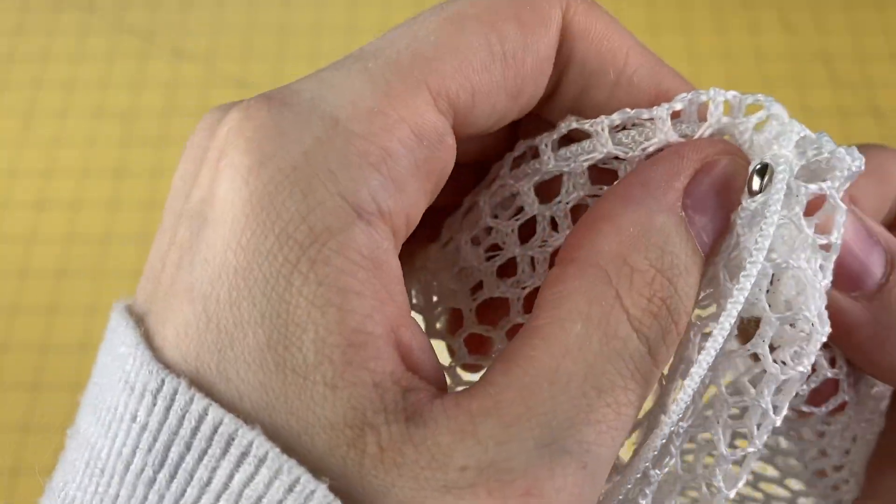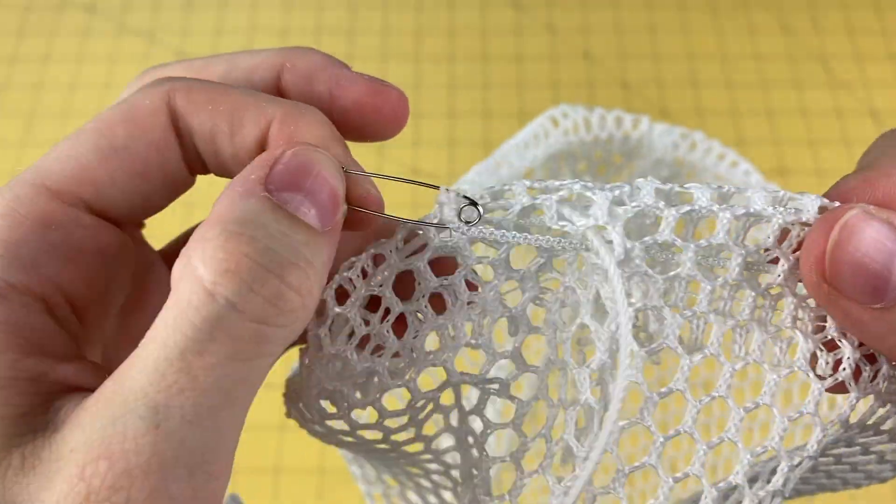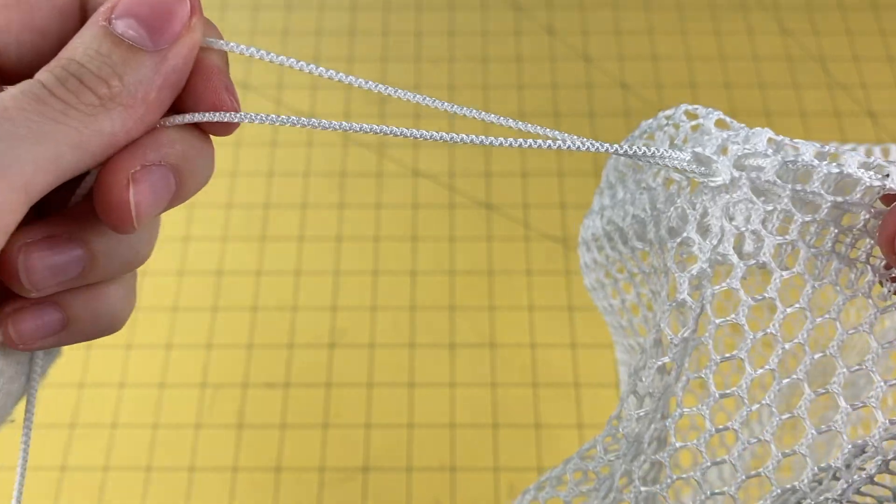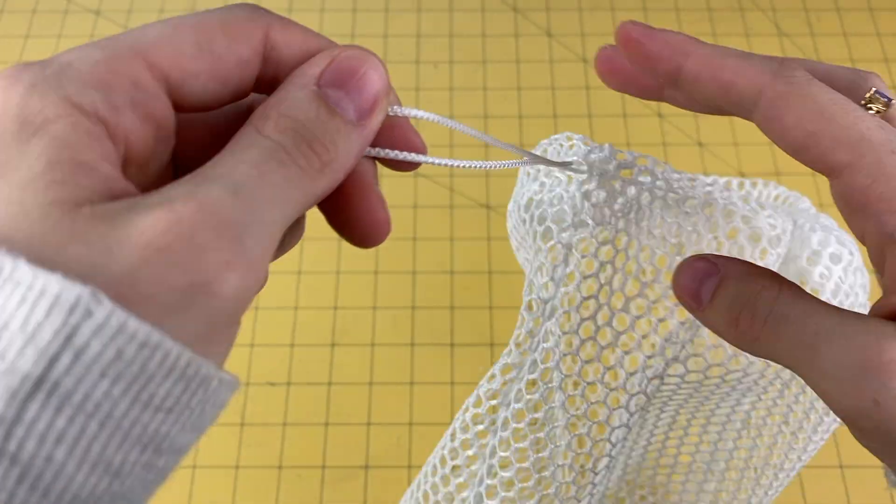Once both ends of that piece of cording are hanging from the same entry and exit point on the other side of the bag, tie the ends together.